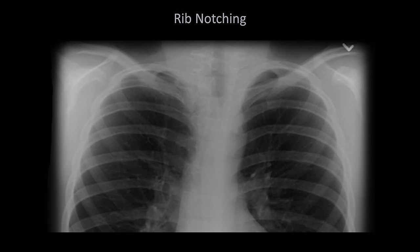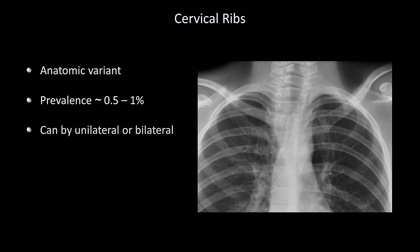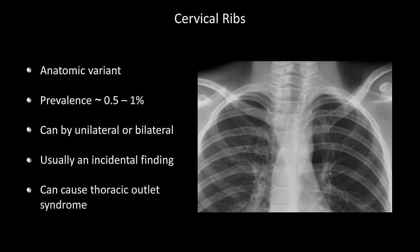Before leaving the bones, there is one anatomic variant worth mentioning: the cervical rib, in which an extra rib arises from the seventh cervical vertebrae. The overall prevalence is cited around 0.5 to 1%, with a greater prevalence in women than men. Cervical ribs can be unilateral or bilateral. They are usually identified as an incidental finding, but can cause thoracic outlet syndrome by compression of vascular structures and/or the brachial plexus.